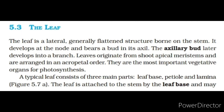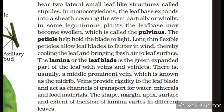The leaf. The leaf is a lateral, generally flattened structure borne on the stem. It develops at the node and bears a bud in its axil. The axillary bud later develops into a branch. Leaves originate from shoot apical meristems and are arranged in an acropetal order. They are the most important vegetative organs for photosynthesis. A typical leaf consists of three main parts: leaf base, petiole and lamina. The leaf is attached to the stem by the leaf base and may bear two lateral small leaf-like structures called stipules. In monocotyledons, the leaf base expands into a sheath covering the stem partially or wholly. In some leguminous plants, the leaf base may become swollen, which is called the pulvinus. The petiole helps hold the blade to light. Long thin flexible petioles allow leaf blades to flutter in wind, thereby cooling the leaf and bringing fresh air to the leaf surface.